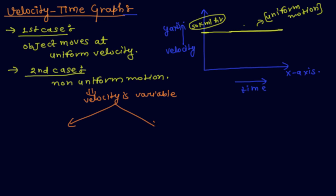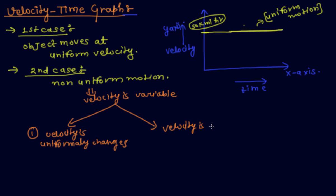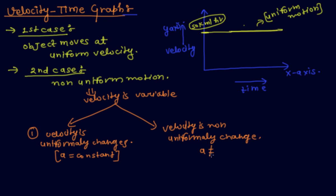This represents two cases. In the first, velocity is uniformly changed. In the second, velocity is non-uniformly changed. Velocity uniformly changed means acceleration is constant, and velocity non-uniformly changed means acceleration is not constant.